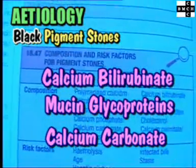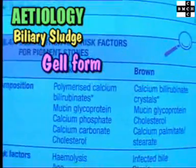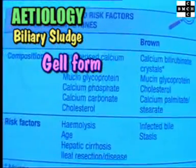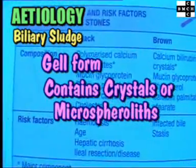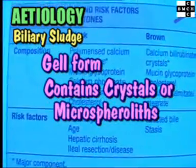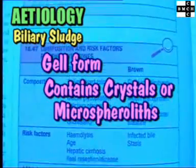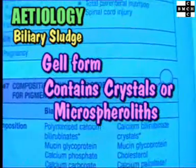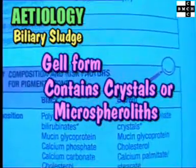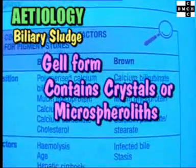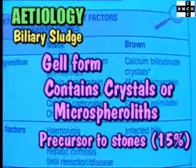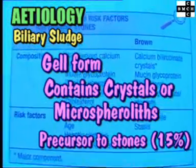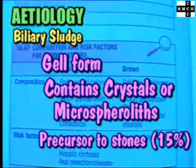The term biliary sludge describes bile which is in a gel form and contains numerous crystals or microspheroliths of calcium bilirubinate and cholesterol crystals. It is a precursor to formation of gallstones in about 15% of patients.